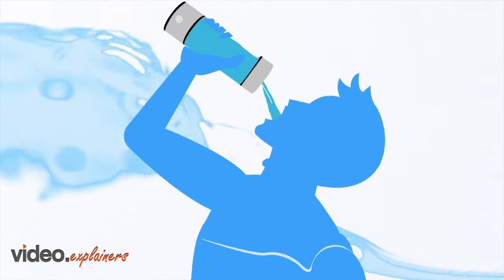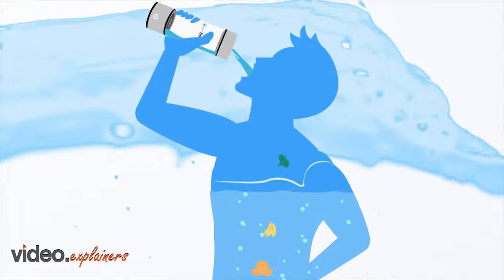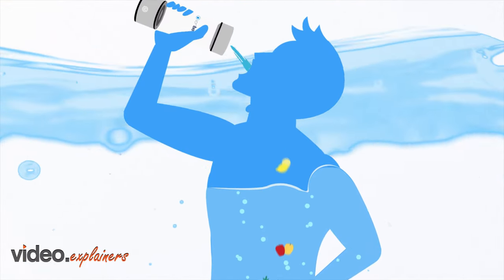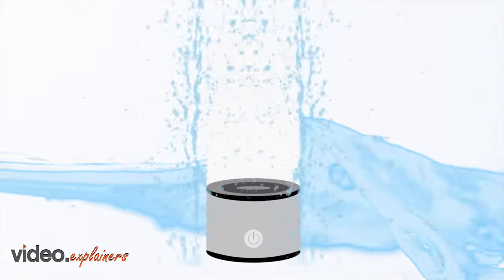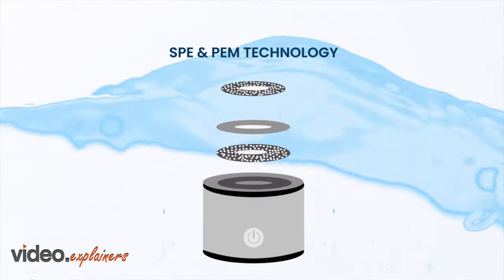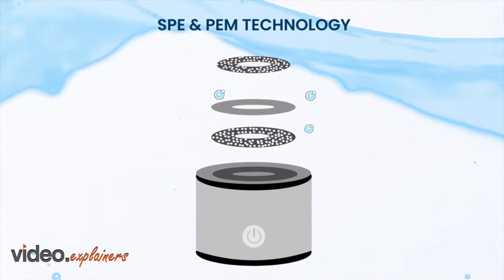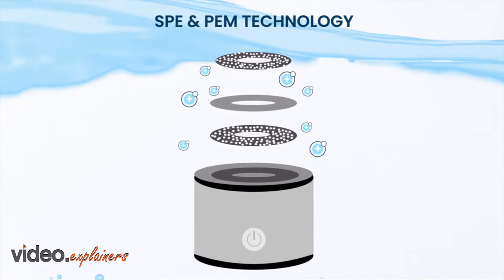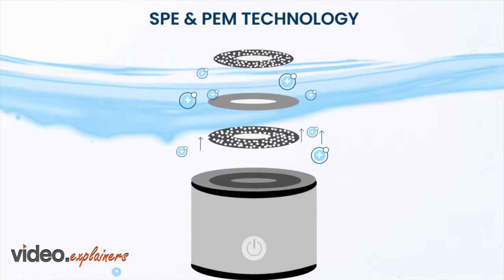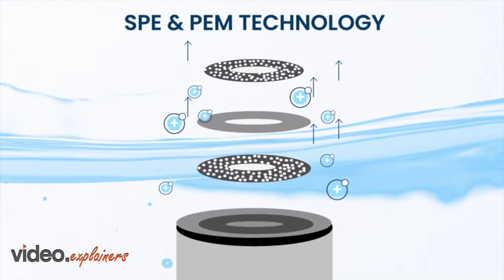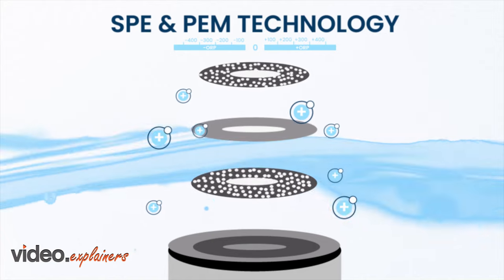Drinking water from Ion Bottles is equivalent to consuming hundreds of high antioxidant fruits and vegetables. It's all in the SPE and PEM technology, which consists of a patented electrolytic film that emits positive ions to increase the hydrogen concentration and create negative oxidation potential.